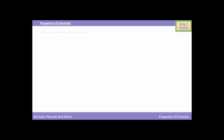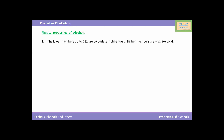Here are the physical properties of alcohols. The lower members up to C11, i.e. carbon number 11, are colorless mobile liquids, while higher members are wax-like solids.